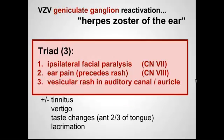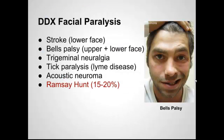There are three symptoms you need to diagnose Ramsey-Hunt. First, ipsilateral facial paralysis. Second, ear pain that usually precedes the rash. And then the rash itself, which is usually vesicular and can be in the auditory canal or the auricle. Some patients also have tinnitus, some vertigo, changes in taste in the anterior two-thirds of the tongue, and sometimes lacrimation.